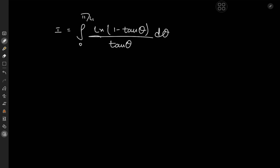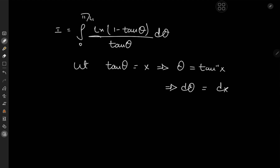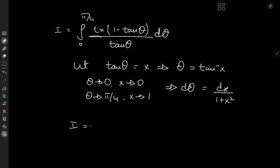A substitution here makes quite a bit of sense: we let tan θ = x, which implies θ = arctan x. Differentiating gives dθ = dx/(1 + x²). As θ → 0, x → 0, and as θ → π/4, x → 1. So the integral transforms into the integral from 0 to 1 of log(1 − x)/x times 1/(1 + x²) dx.